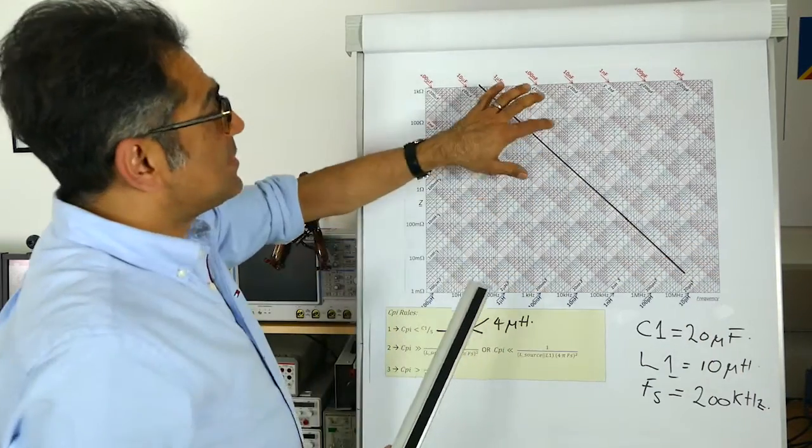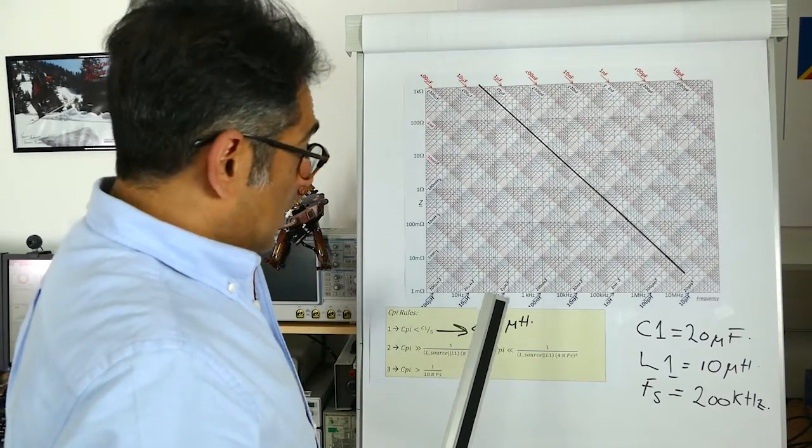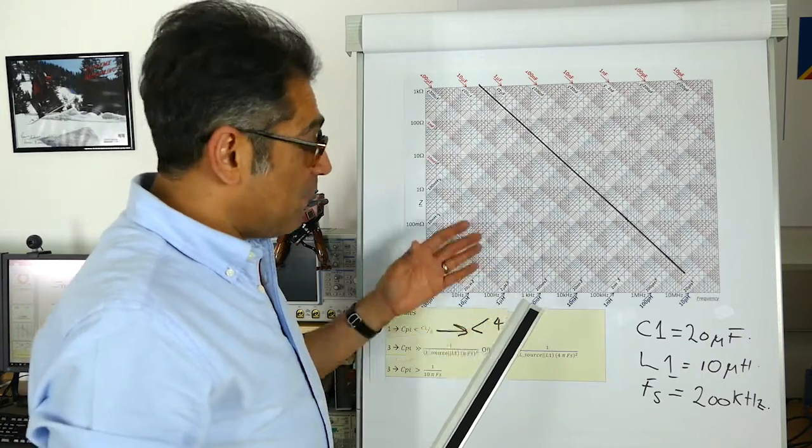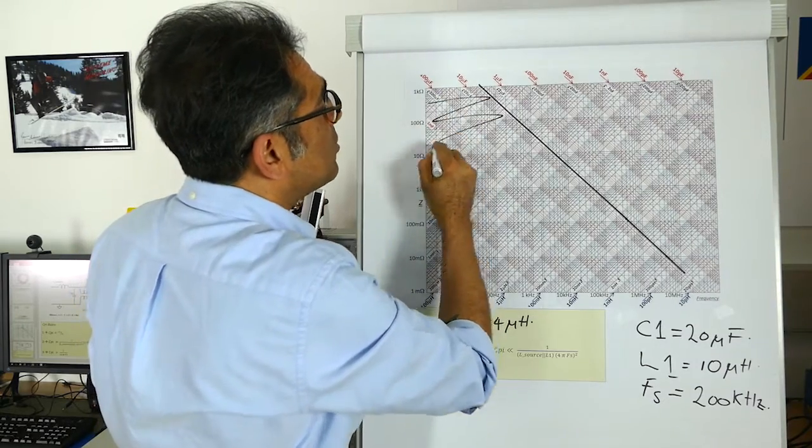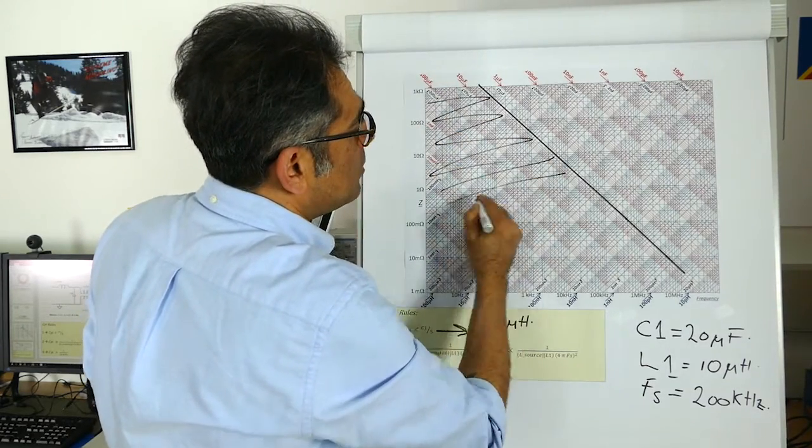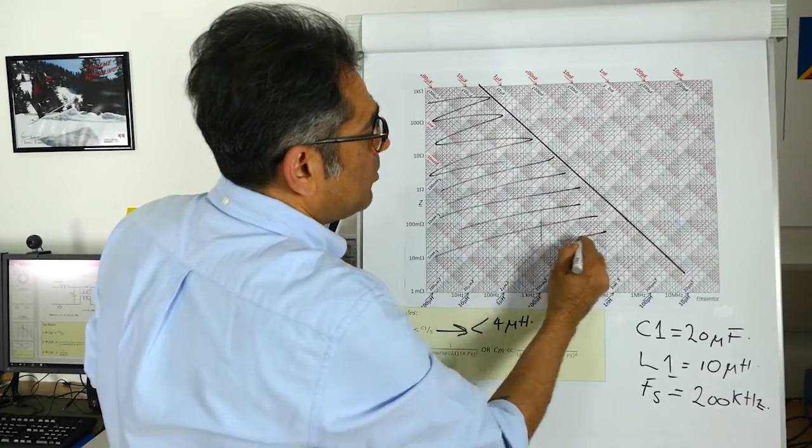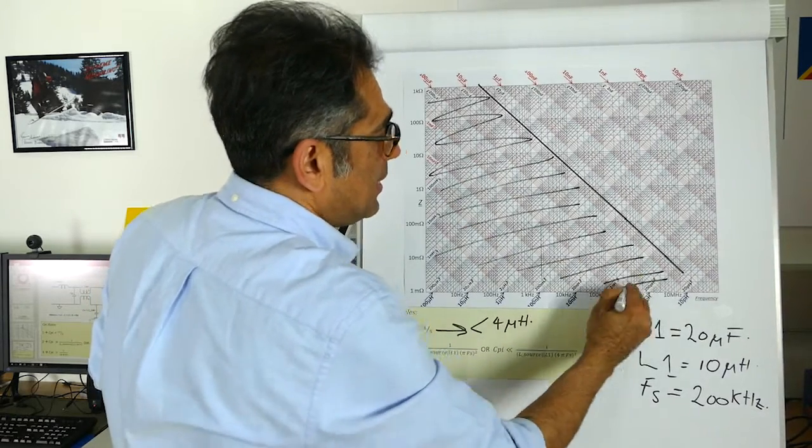And I draw a line down here. And I know that this capacitor must be smaller than 4 microfarads. So it cannot be in any of these regions. So I can immediately cross out all of this region here to show that my capacitor cannot be bigger than this value.